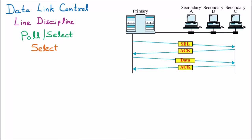Now we are discussing the select function. The select function is part of poll and select, which is part of line discipline under data link control. Talking about the select function, poll and select work for the primary and secondary stations.